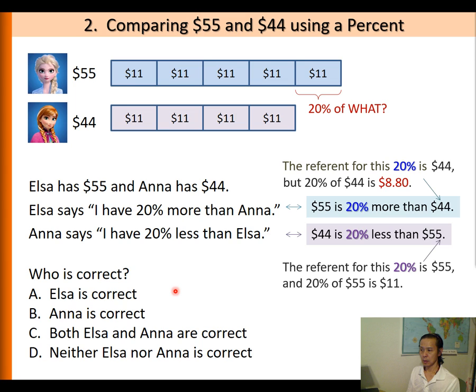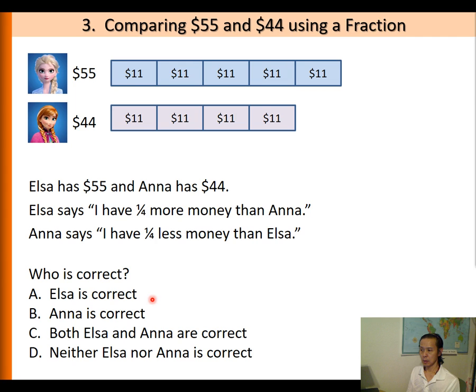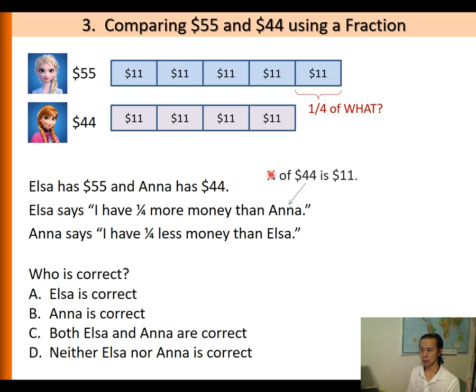Now let's compare using a fraction. This time Elsa says I have a quarter more money than Anna, whereas Anna says I have a quarter less money than Elsa. So who's correct? Again, we want to ask: a quarter of what? When Elsa says I have a quarter more money than Anna, this quarter is referring to Anna's $44. So a quarter of $44 is indeed $11, so Elsa is correct.